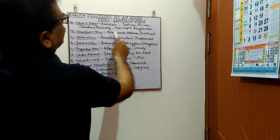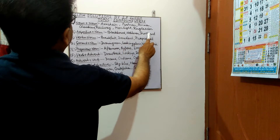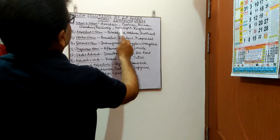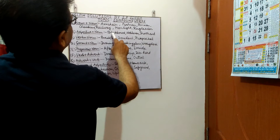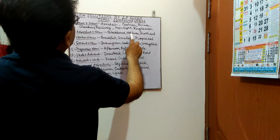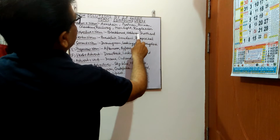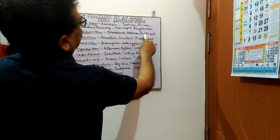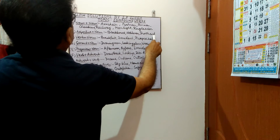In adjective plus noun compounds, the first part is adjective and the second part is noun. Black is adjective and board is noun. Noble is adjective, man is noun. Short is adjective, hand is noun.